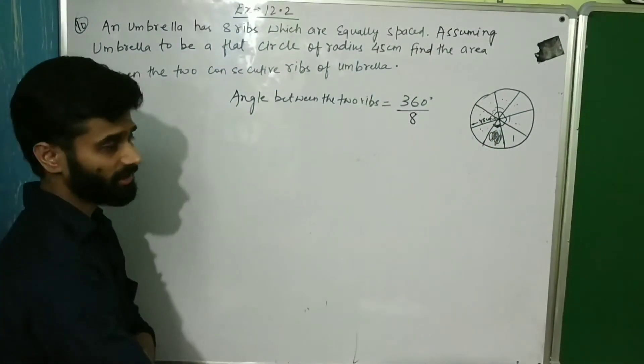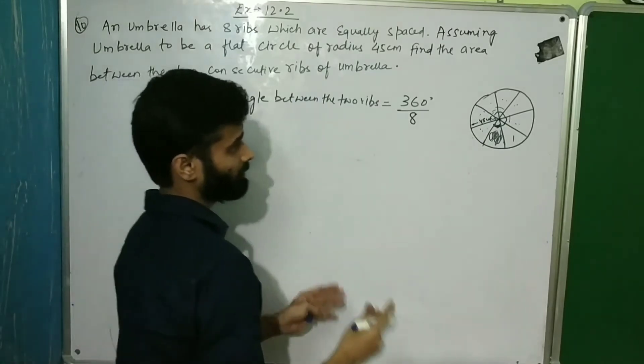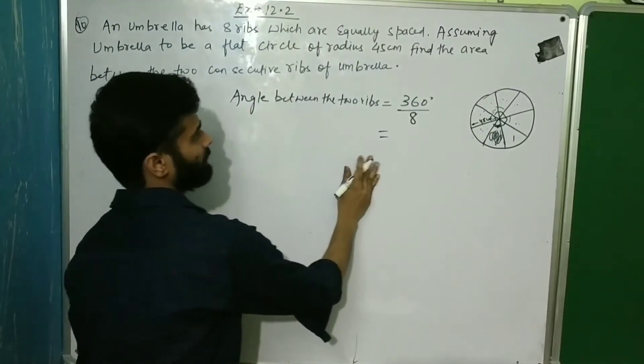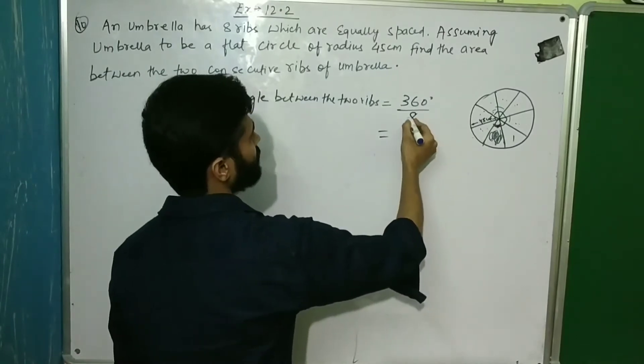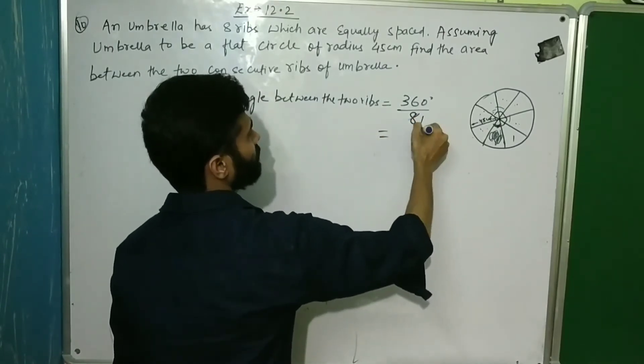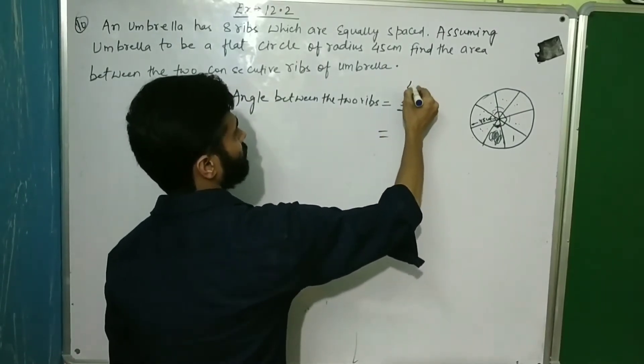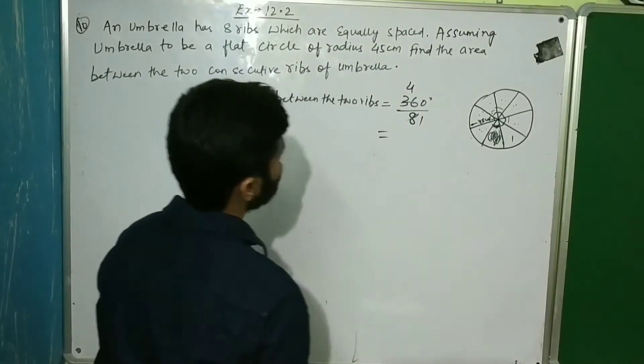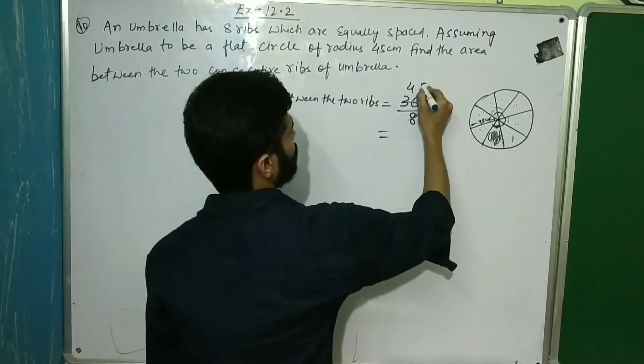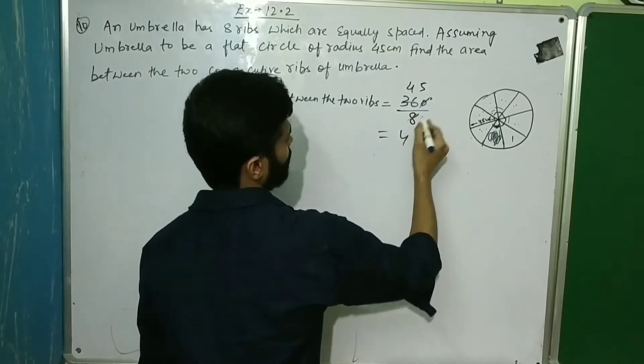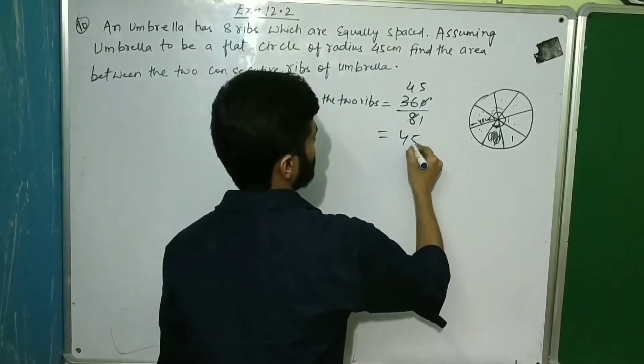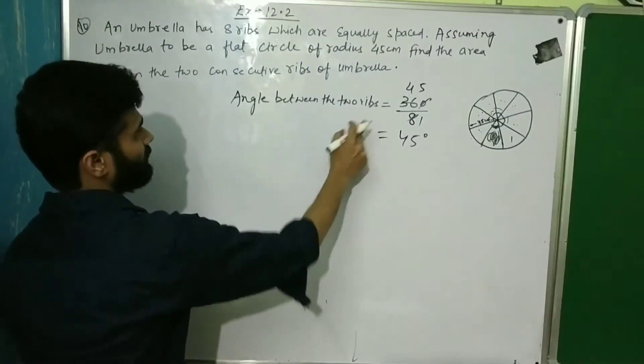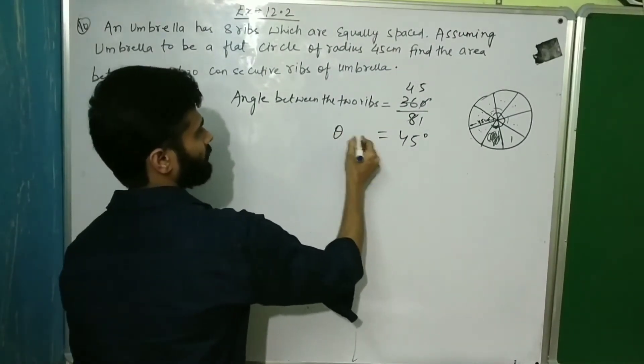So the angle between the two ribs, we will divide 360 degrees by 8. Angle is 8, 360 divided by 8 equals 45. So angle between the two ribs, theta is equal to 45 degrees.